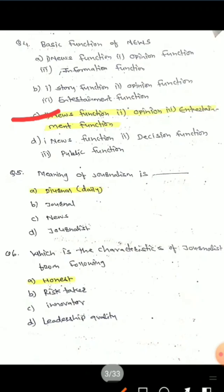Question 5: What is the meaning of journalism? In many literature sources the meaning of journalism is given differently. Options are: A) Diagonal/Daily, B) Journal, C) News, D) Journalist. If the option 'journal' is available, that can be the correct answer, but from some literature it is given as 'dienol' meaning 'daily.' You can write 'journal' as the correct answer.